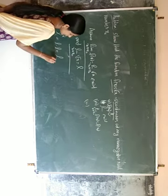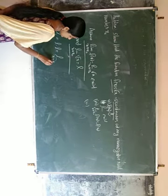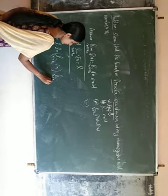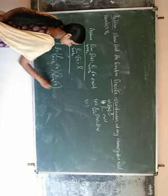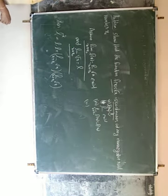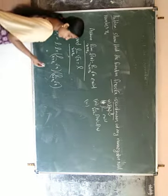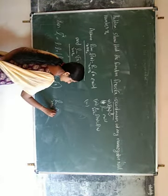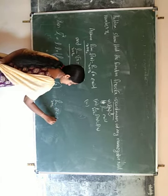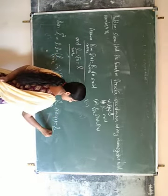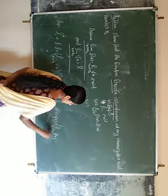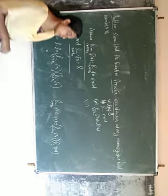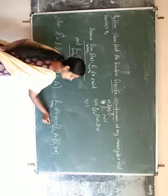By product rule, the limit x tends to x₀ of f(x) into g(x) equals limit x tends to x₀ f(x) into limit x tends to x₀ g(x). So by product rule, limit x tends to x₀ root x into root x.